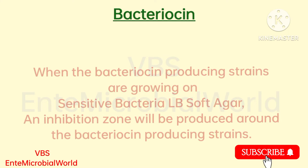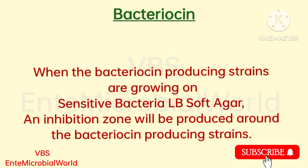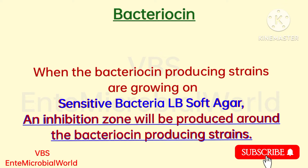When the bacteriocin-producing strains are growing on sensitive bacteria on soft agar, an inhibition zone will be produced around the bacteriocin-producing strains.